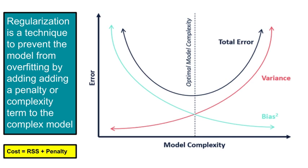So let's get started. Regularization is the key concept in this whole video. Basically, when a model performs really well on the training data but does not perform well on the test data — the unseen data — that is called overfitting. It is a very common problem in machine learning. Such a model will have a very low bias but, since it does not perform well on the unseen data, it shows very high variance.